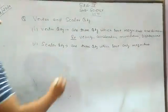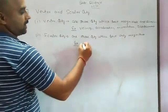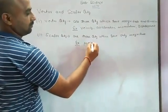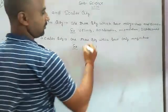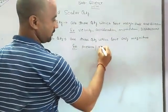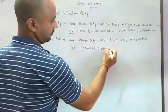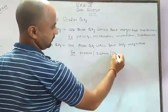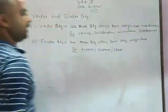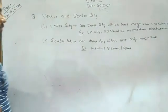Examples of scalar quantities are pressure, distance, and speed. These are the scalar quantities.